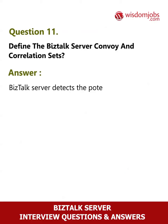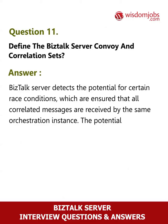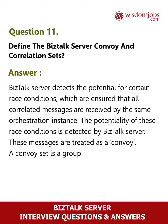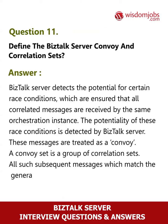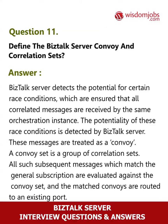Question 11: Define BizTalk Server convoy and correlation sets. Answer: BizTalk Server detects the potential for certain race conditions, ensuring that all correlated messages are received by the same orchestration instance. These messages are treated as a convoy. A convoy set is a group of correlation sets; all subsequent messages matching the general subscription are evaluated against the convoy set, and the matched convoys are routed to an existing port.